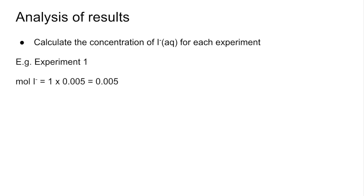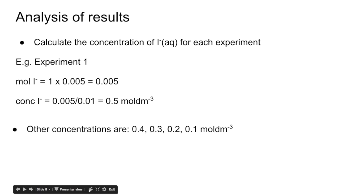The moles of I⁻ is concentration times volume. Remember we used 5 cm³, so there's that many moles in 10 cm³. The concentration is moles divided by volume, so it's 0.5 for experiment 1. The other concentrations are going to be those.